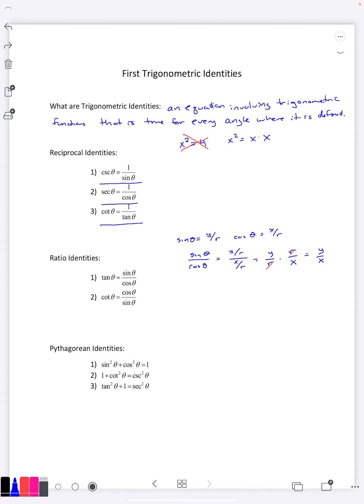So the next identity is called the ratio identity. Tangent of any angle is the same answer as if you take the sine of the angle and divide it by the cosine of the angle. Similarly, since cotangent is reciprocal of that tangent, cotangent of an angle is the cosine of that angle divided by the sine of that angle.